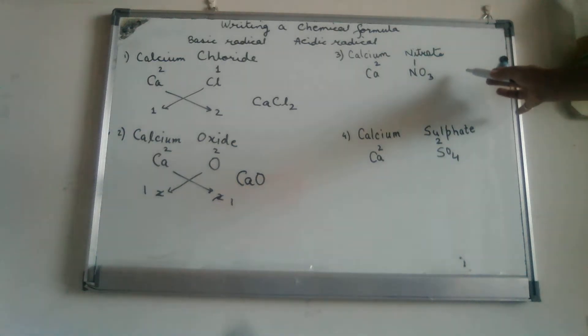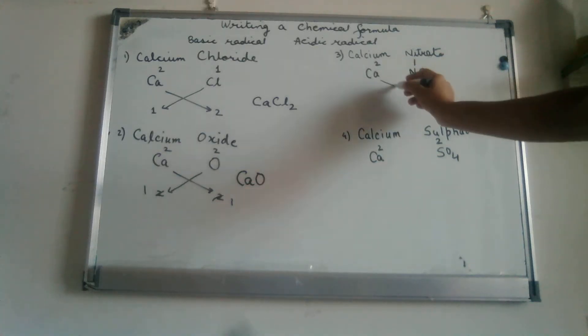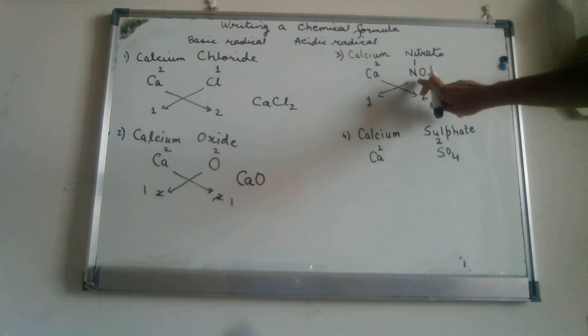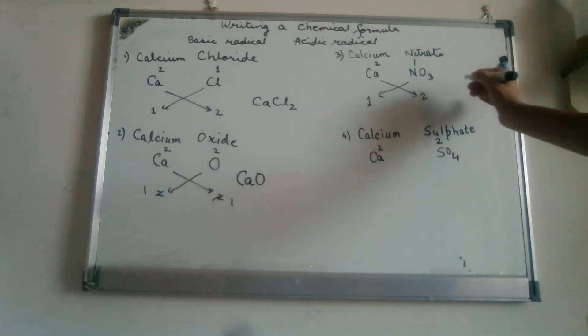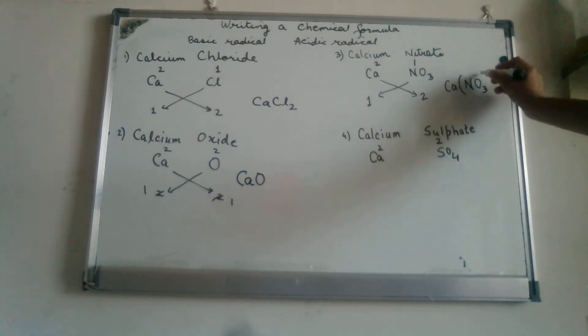Come to the third example of the type where we have calcium nitrate. Calcium 2, nitrate 1. Cross the valencies, we have 2 and we have 1. If you notice over here, in this radical we have two elements, nitrogen and oxygen, which together make up the nitrate radical. So when we have to write 2, we will write CaNO3. So this 2 applies for both. Hence we put a bracket and a 2 outside. We say it Ca(NO3)2, whole twice.